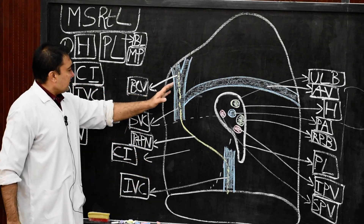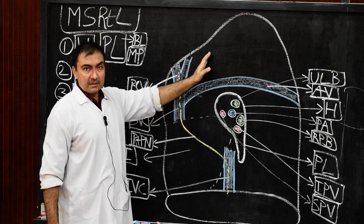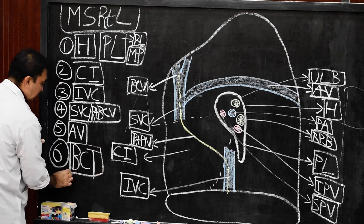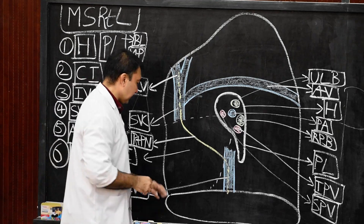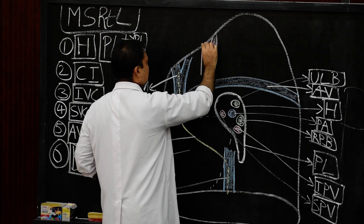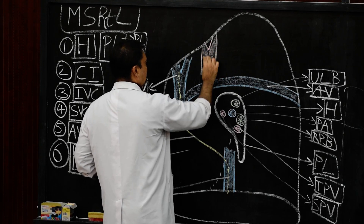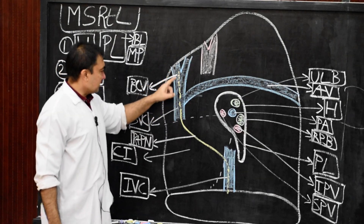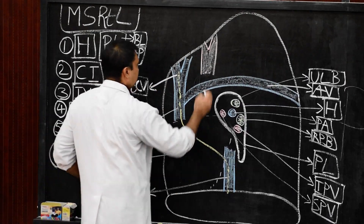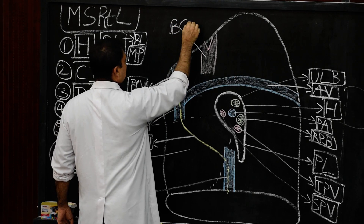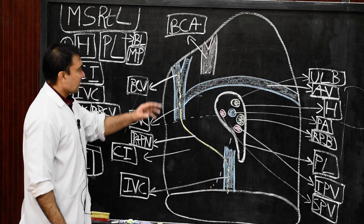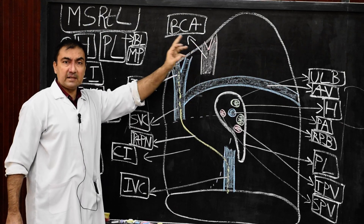Point number six: there will be a small vertical impression just behind the brachiocephalic vein, known as the brachiocephalic trunk impression — that is, the brachiocephalic artery impression. This vertical impression will be just behind and above the impression of the superior vena cava and brachiocephalic vein, before it divides into the right common carotid and right subclavian artery.